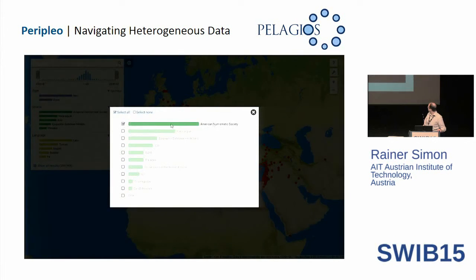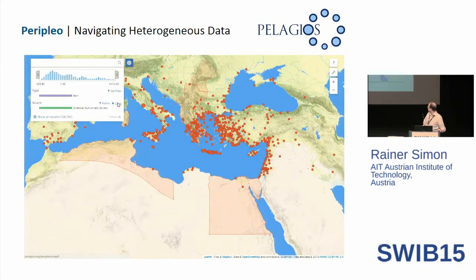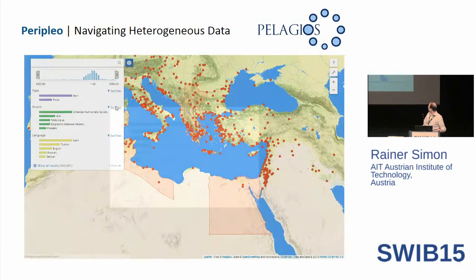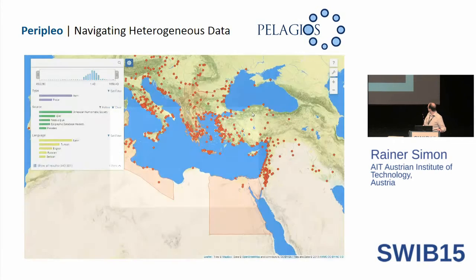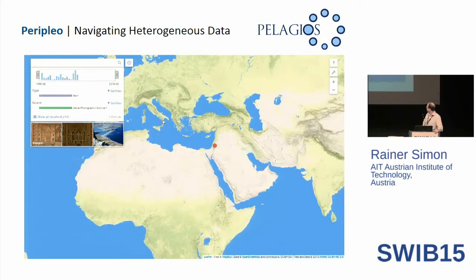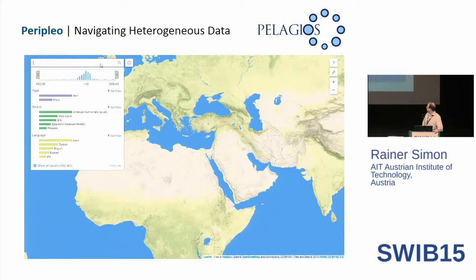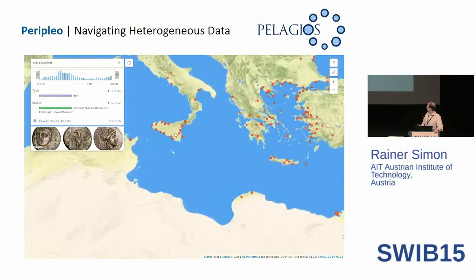You can search and set filters on pretty much anything. Let's set the filter for one of the collections — a partner data set. You can see the coverage and the temporal distribution of that data set. Let's set a filter on a smaller data set called the Aerial Photographic Archive of the Middle East. You can also see preview images; many data sets come with thumbnail images for records. You have full-text search. One example I like to use is the tetradrachm — an ancient Greek coin type. Here's the geographical distribution for this search term, and you can also see the temporal distribution.